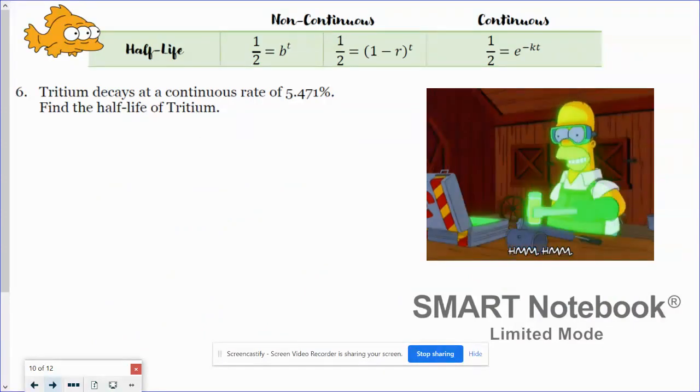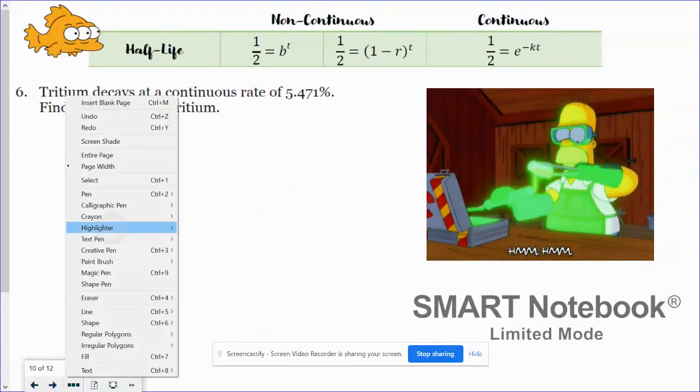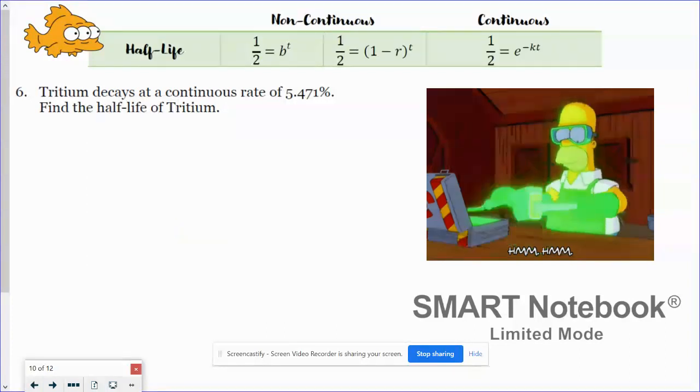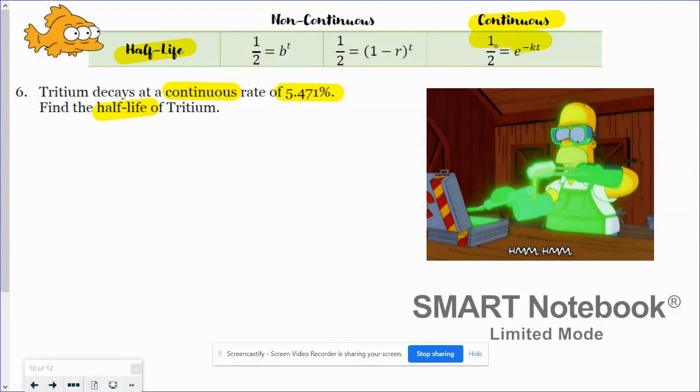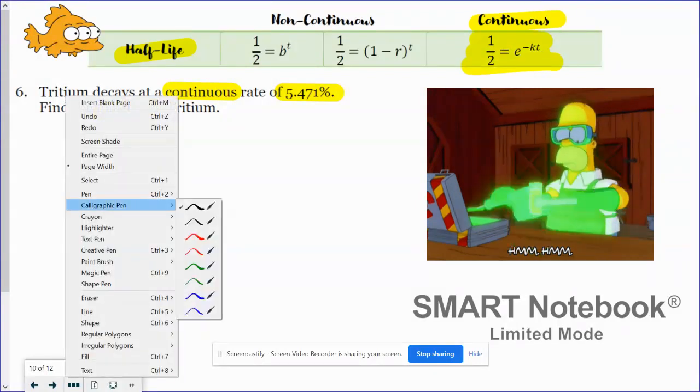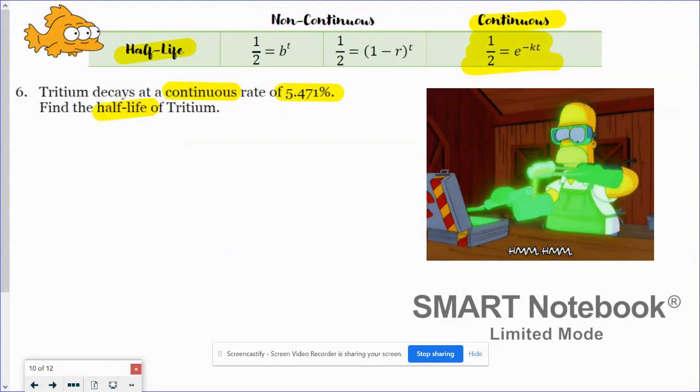Tritium decays at a continuous rate of 5.471%. Find the half-life of tritium. So we have a continuous situation. This is the percent rate. We're finding the half-life. So half-life continuous. This is the formula. One half e to the negative kt power is what it looks like.